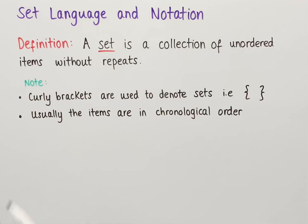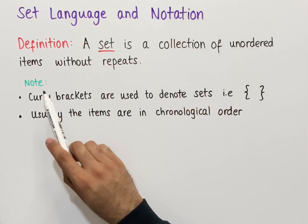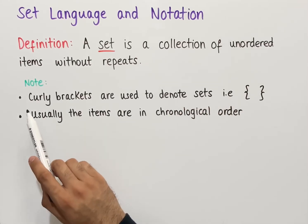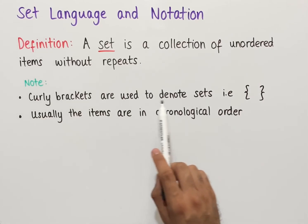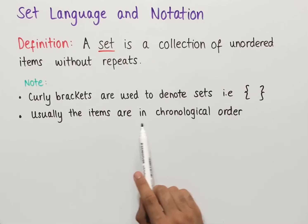Let's look at set language and notation. The definition is that a set is a collection of unordered items without repeats. Some key notes are that we use curly brackets to denote sets, and usually the items are in chronological order.